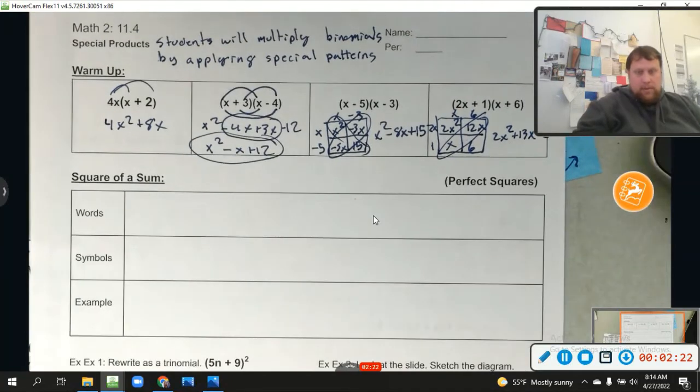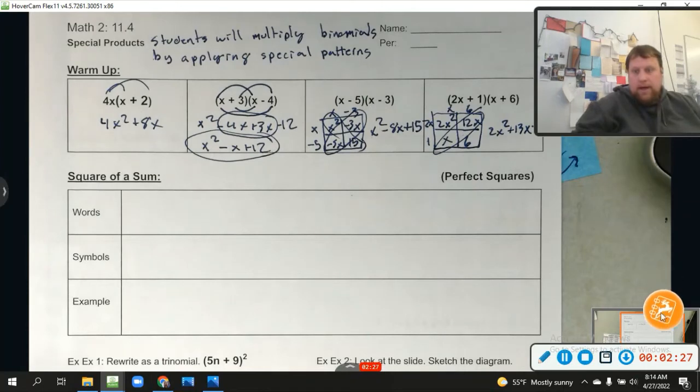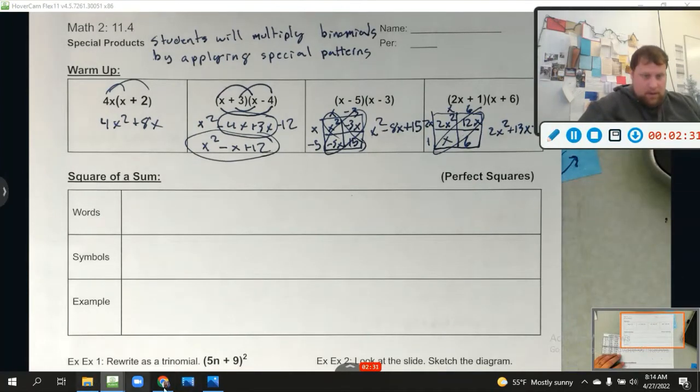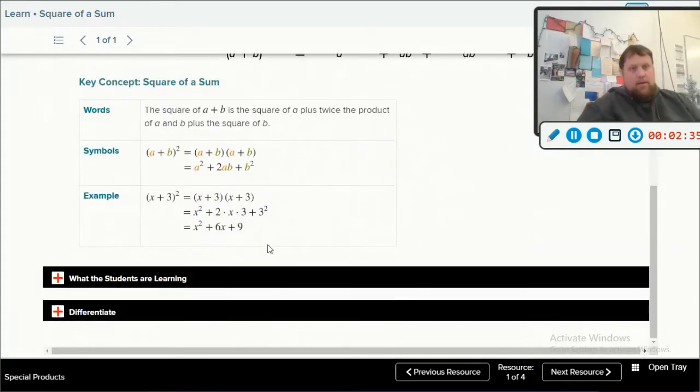Awesome. So we're going to move right on. We're going to learn some special patterns to make it so we don't even have to set those up. We can just kind of do them out. The key concept is the square of a sum, which basically tells me the square of a plus b is going to equal a squared plus twice the product of a and b plus b squared. In other words, (a + b)² = a² + 2ab + b².